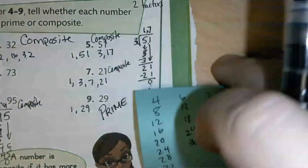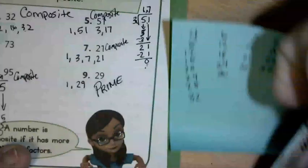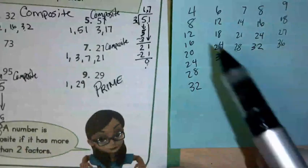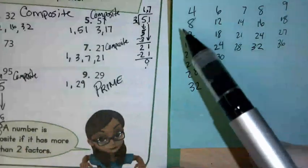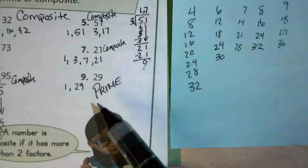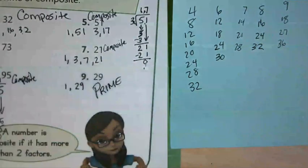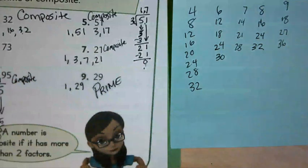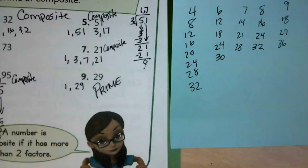There are two ways to figure out the factors of a number: listing them all out, which works well for smaller numbers like 29, or dividing for bigger numbers. That's all we've got for today, fourth grade. Keep working on prime and composite numbers — I'll see you next time!